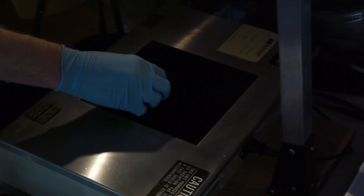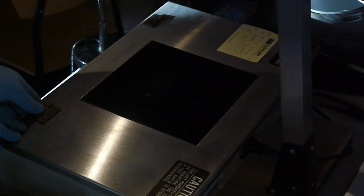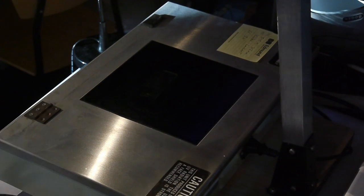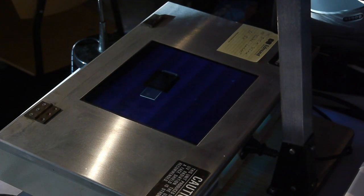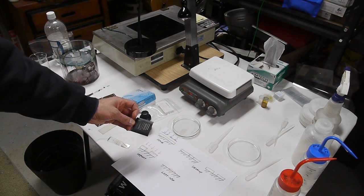Next, I expose the photoresist to ultraviolet light through a pattern. In this case, I'm just using a really primitive resolution test that I made on my vinyl cutter. It has line pairs of descending thickness.